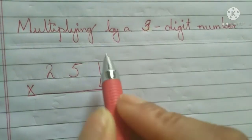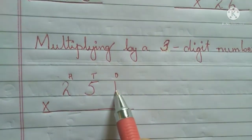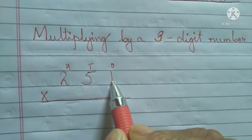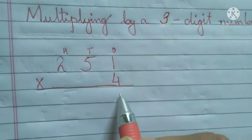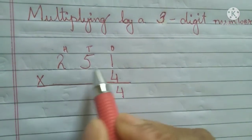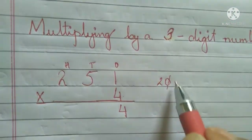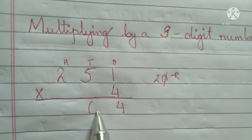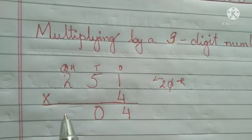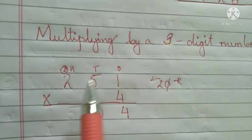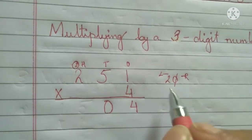Let's multiply — you always need to start from ones place. So ones place: four ones are four, four fives are 20. The number on the right side you write down, and the number on the left side you carry over to the next number. This two is carried over to the hundreds place.